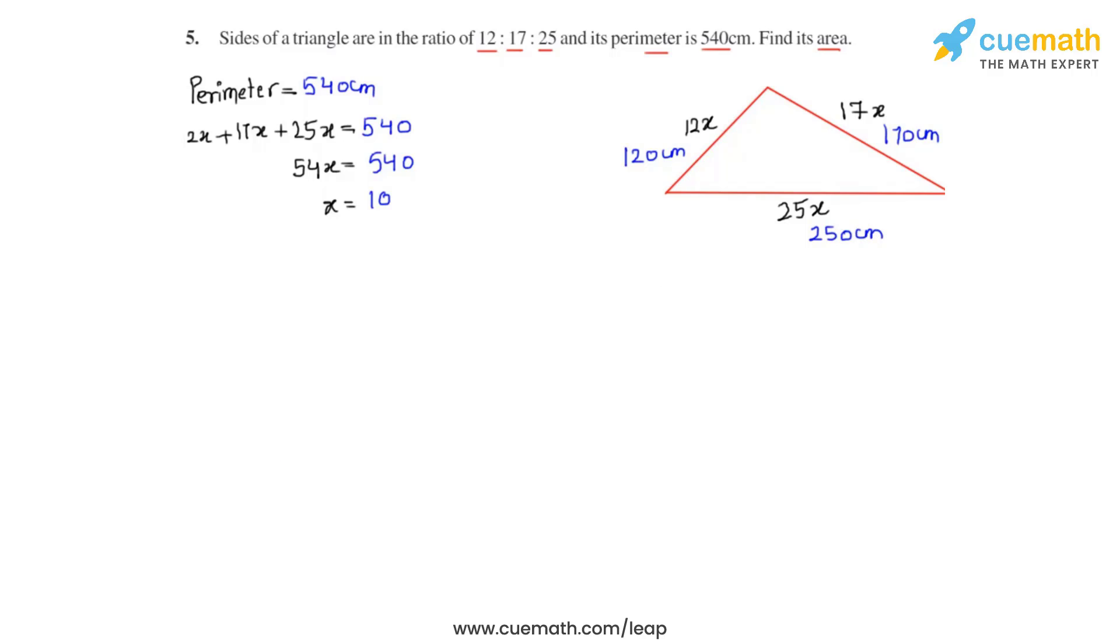Now our second step is to find the semi-perimeter of this triangle which is nothing but half the perimeter as the name suggests. So we can simply divide 540 by 2 and so we get the semi-perimeter s to be equal to 270 centimeters.